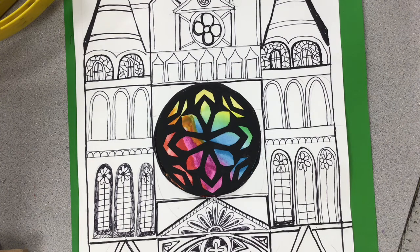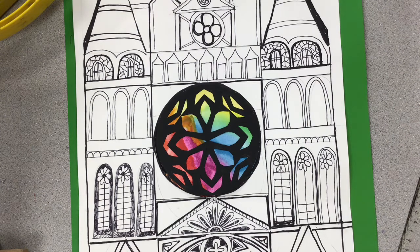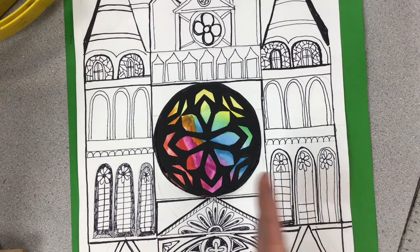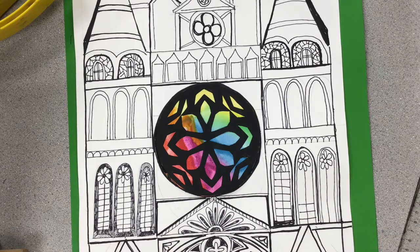One of the interesting things is a Gothic Cathedral often has three sections, one, two, three, and three levels.